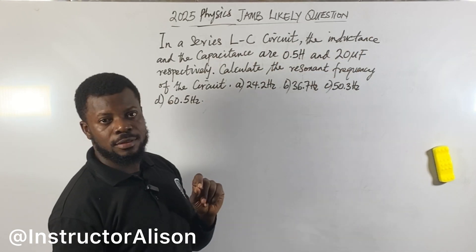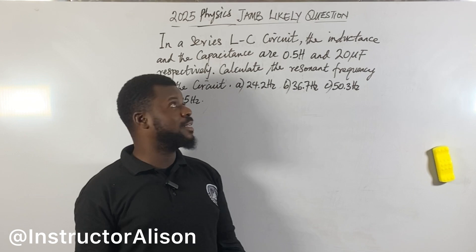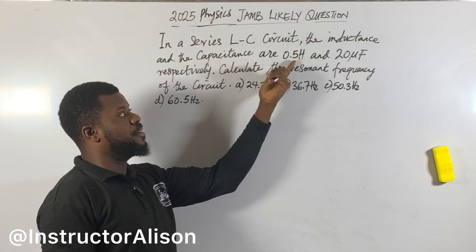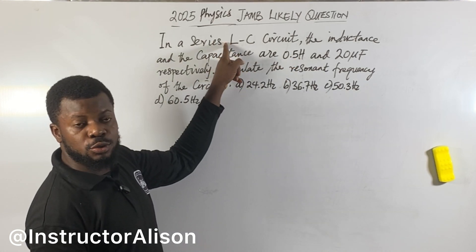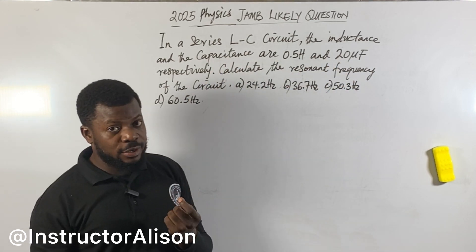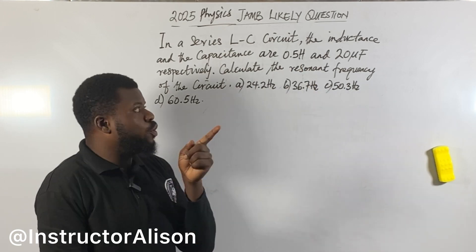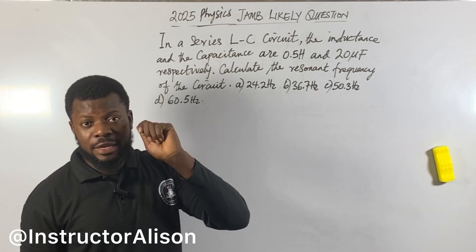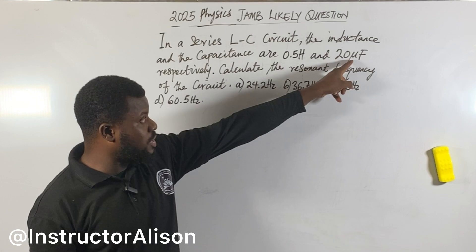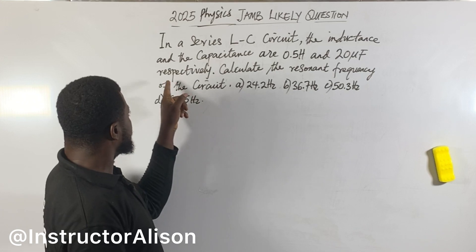The inductance and the capacitance — they mentioned two things. 0.5 Henry — the unit of the inductor is Henry. And 20 microfarad — the unit of the capacitor is farad, not microfarad. They can give you microfarad, but you need to convert from microfarad to farad. If you use 20 directly without the multiplier for the unit, you will fail. I'm going to teach you the conversion respectively.